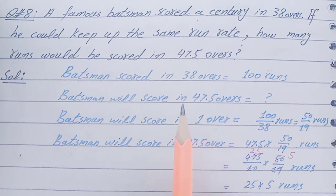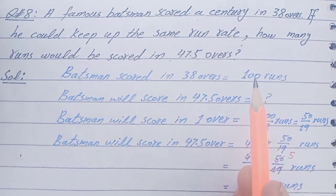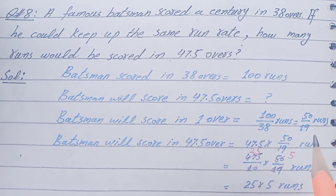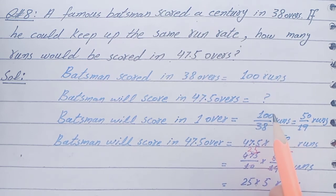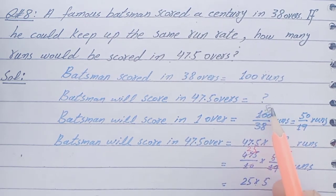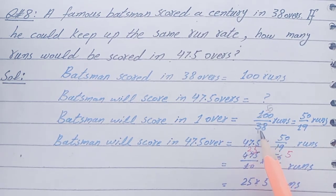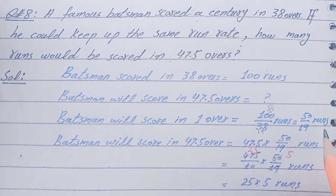We will find the score in one hour. Batsman will score in one hour = 100 divided by 38. If we cancel on the table of 2, that will be 50 over 19. So the runs scored in one hour is equal to 50 by 19 runs.